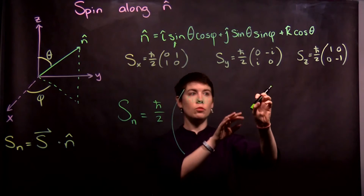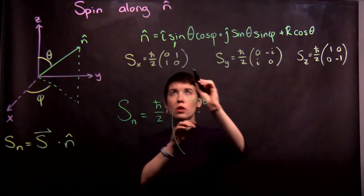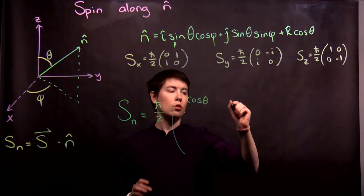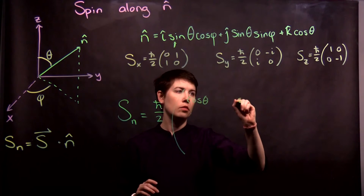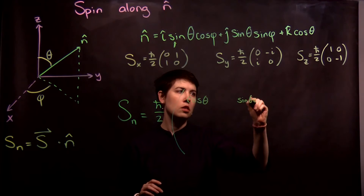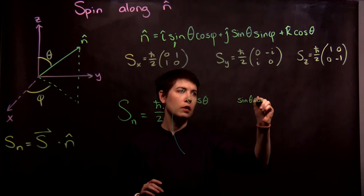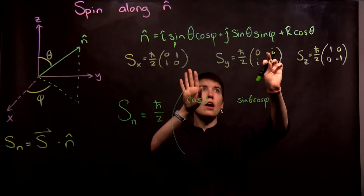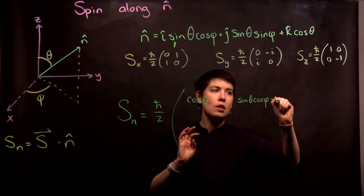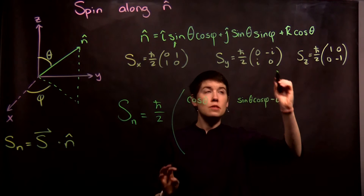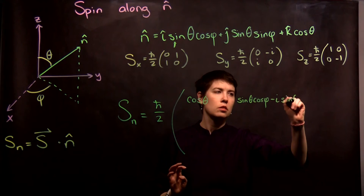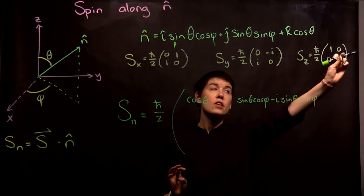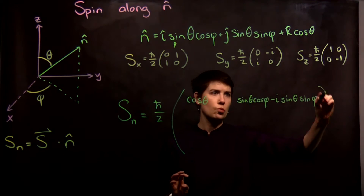Now let's move to this term. Notice that here I have a one, so I have sine theta cosine phi. And then here I have negative i, so minus i sine theta sine phi.